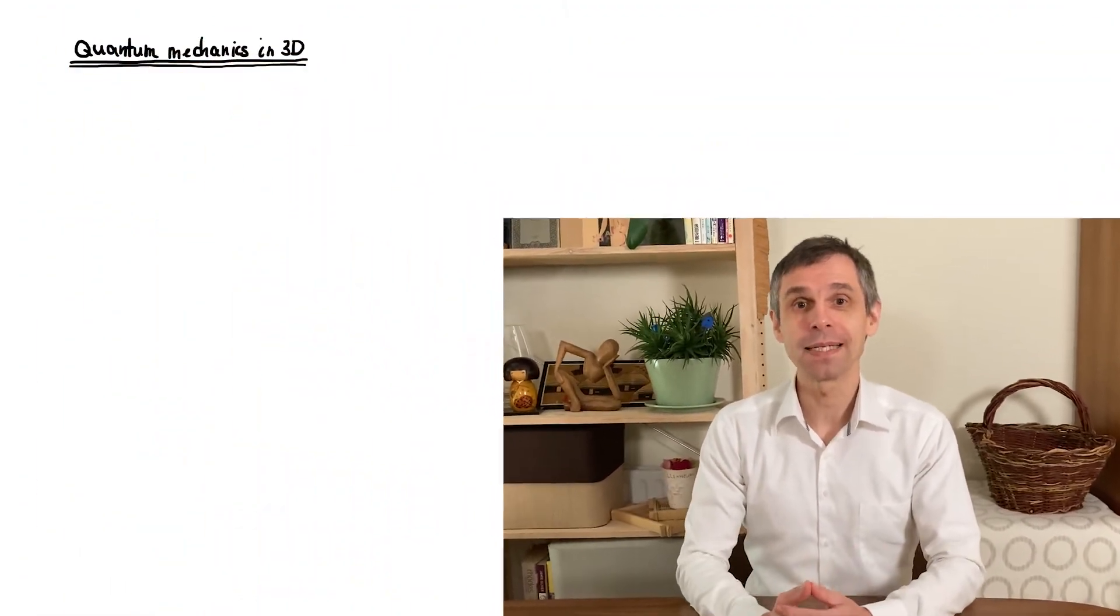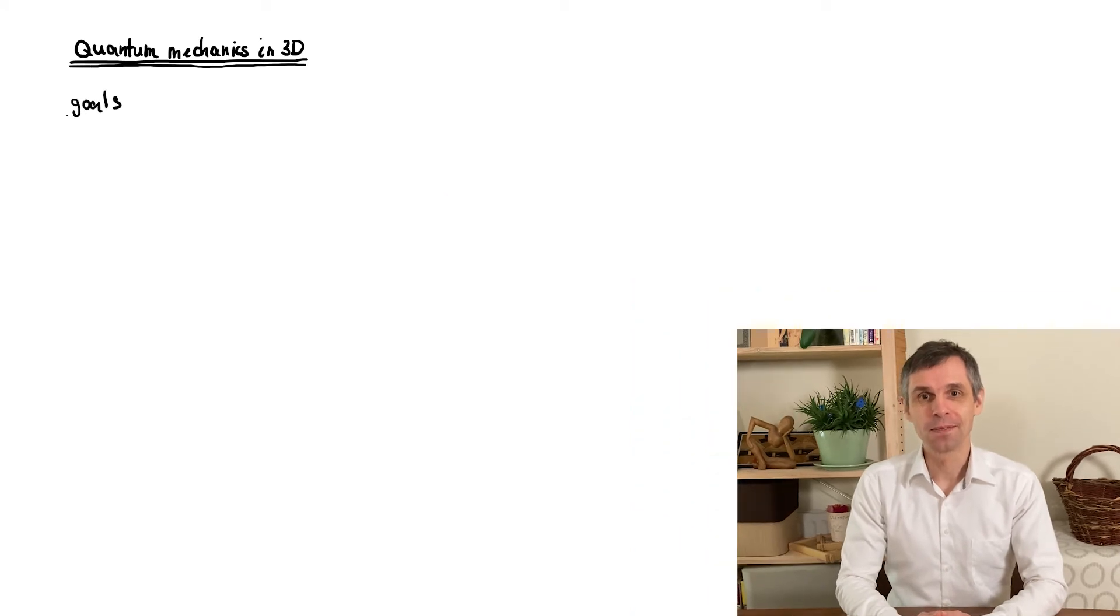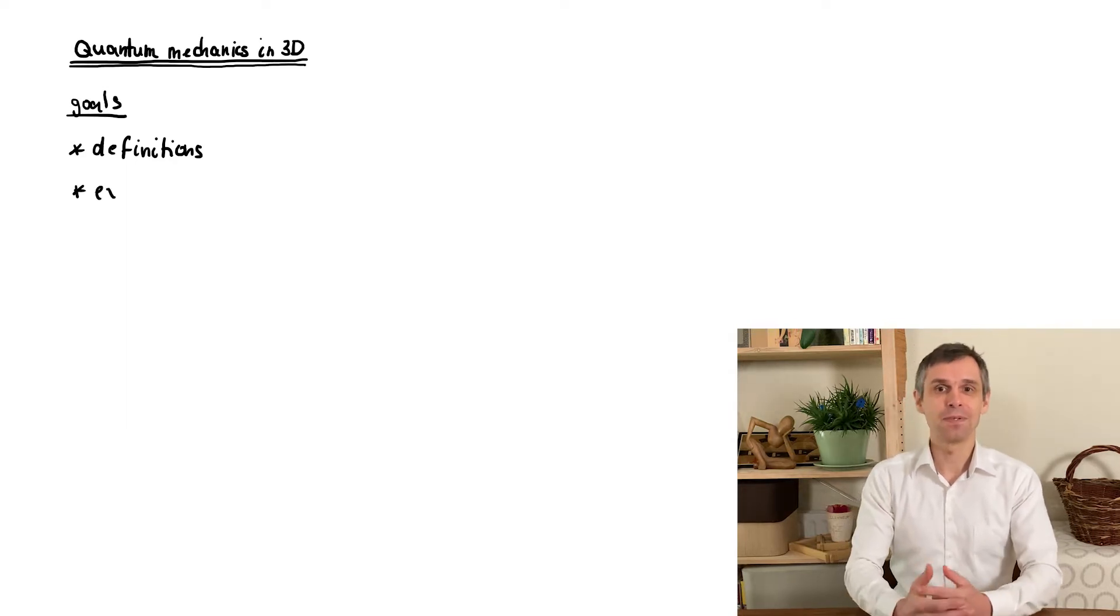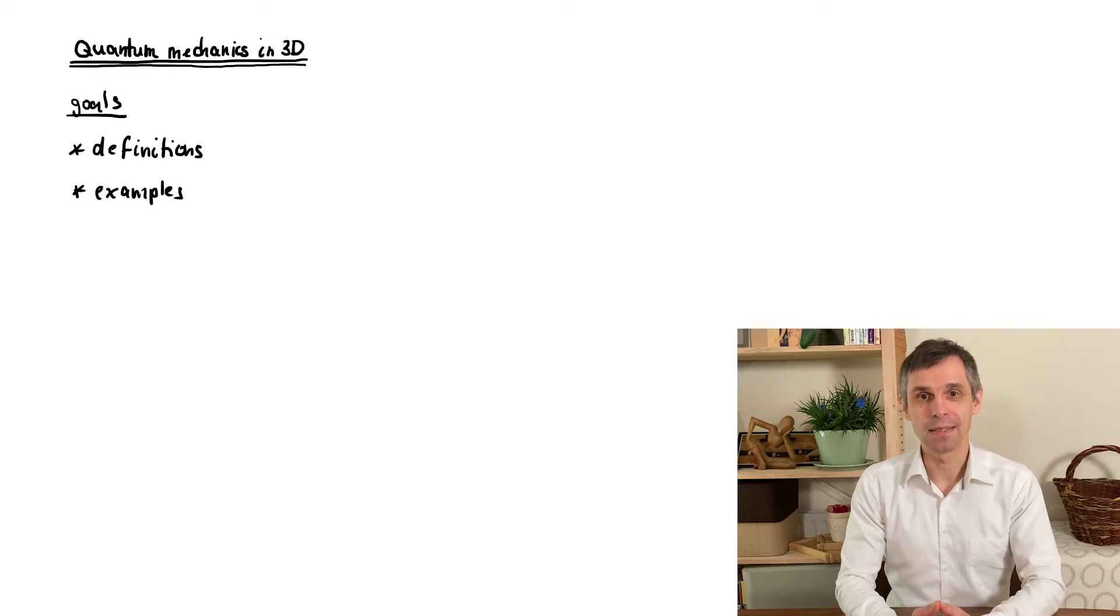We will proceed through this chapter as follows. First we set out the general quantum theory of a point particle moving in three spatial dimensions. These are a set of definitions tied to our four postulates.